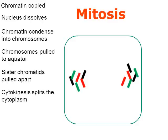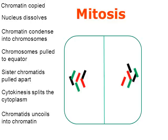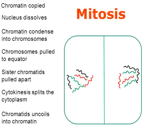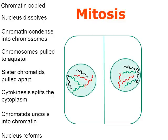As we get near the end, cytokinesis is going to split the cytoplasm of the cell. And ultimately, the chromatids are going to uncoil back into chromatin. Lastly, the nucleus is going to reform. That's a real quick summary. If you come back to this at the end, it would be a nice little summary for you. So let's go ahead and get started and go through that process.